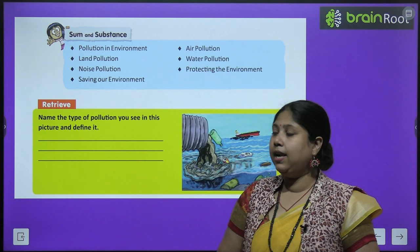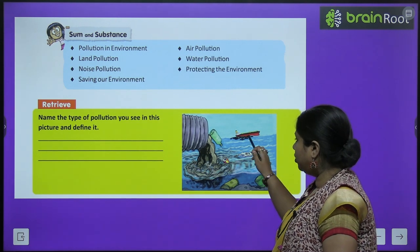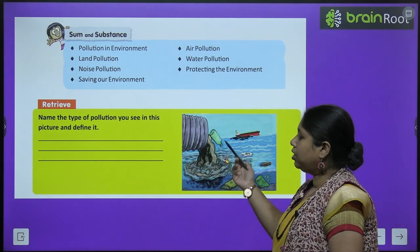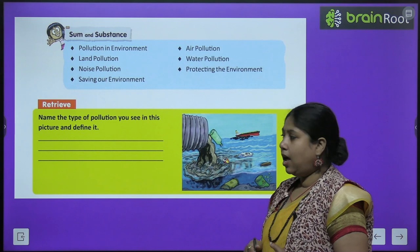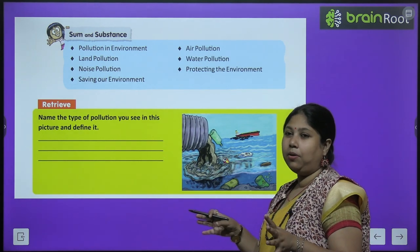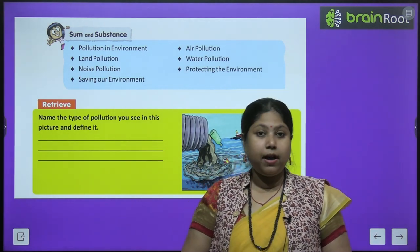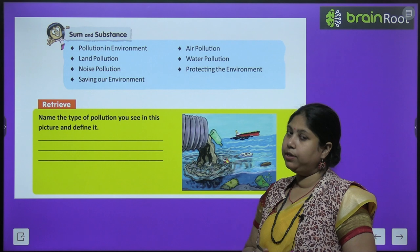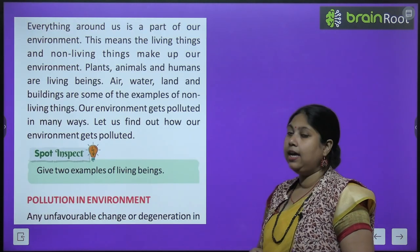Before starting the chapter, let's do the retrieve exercise. Can you see this picture, children? Aap dekh sakte hain — yeh samundar hai, the ship is going and bhoat sara kura pani mein ja raha hai. Name the type of pollution you see in this picture and define it. Yeh water pollution hai — when impurities, dirt, unnecessary waste and harmful substances mix with water, that is called water pollution. Kyunki yeh paani ab dhushit ho chuka hai, ispaani ko use karne se ham bimaar par jayenge. Isilie, hume apni aaspas ki chizo ko saaf suthra rakhna chahiye.